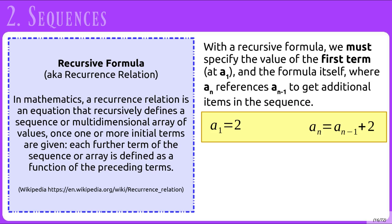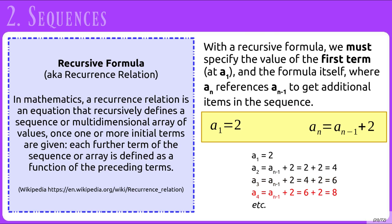Here's an example recursive formula: a sub 1 is 2, and for all terms after it, a sub n equals a sub n minus 1 plus 2. Starting with the first term, which is already given, a sub 2 equals a sub 1 plus 2, which is 2 plus 2, or 4. Then a sub 3 is 4 plus 2, or 6. We can continue to generate as many terms as we'd like — this sequence goes 2, 4, 6, 8, and so on.